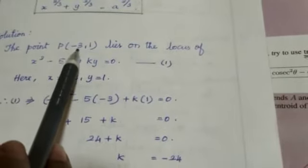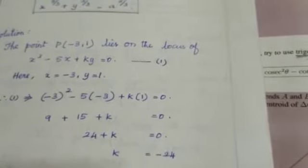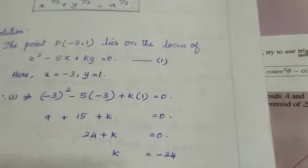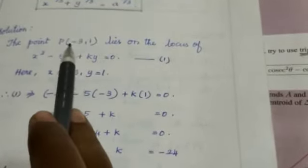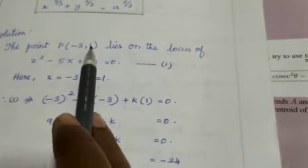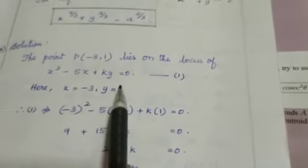The point p minus 3 comma 1 lies on the locus of x square minus 5x plus ky equal to 0. Here in this we have to take this minus 3 as x and 1 as y. x equal to minus 3 and y equal to 1.